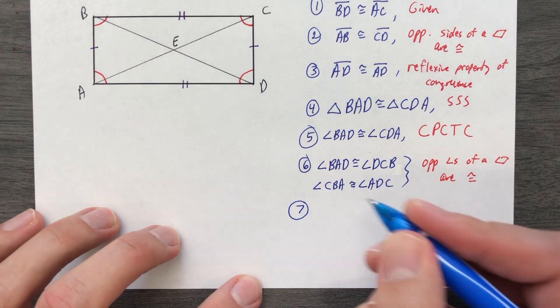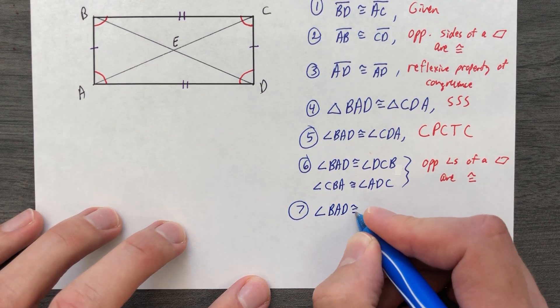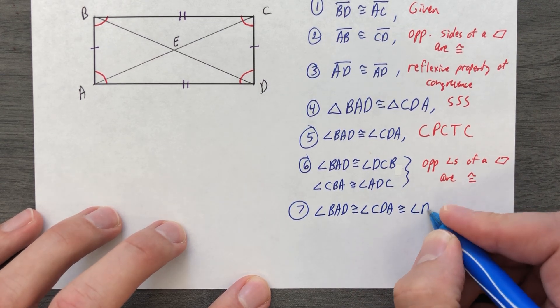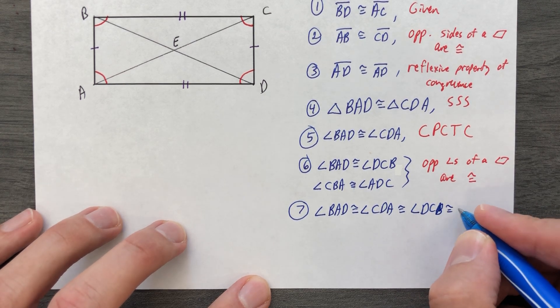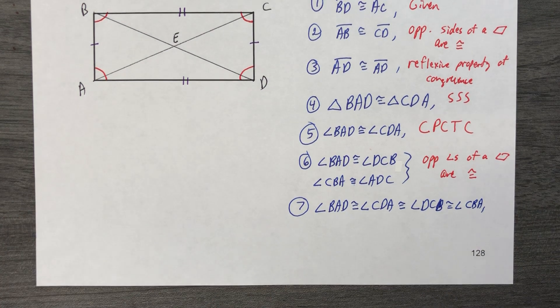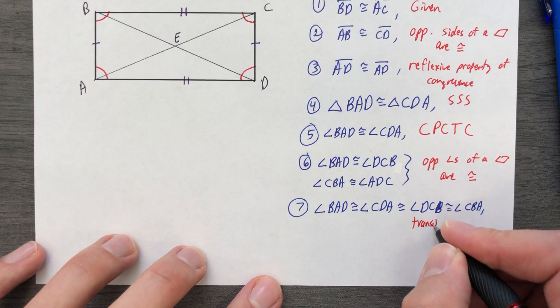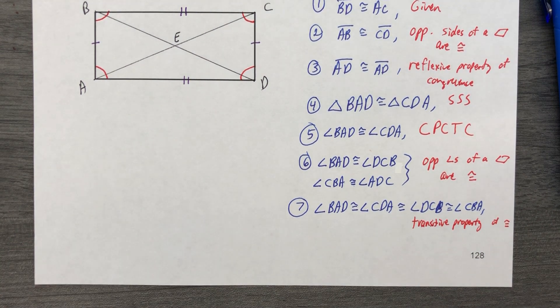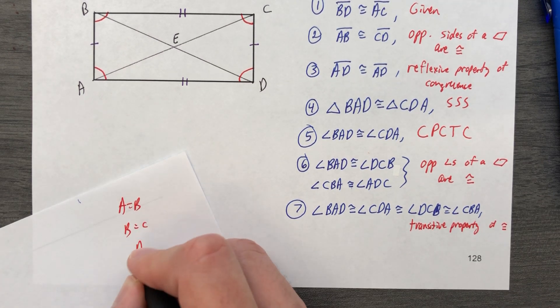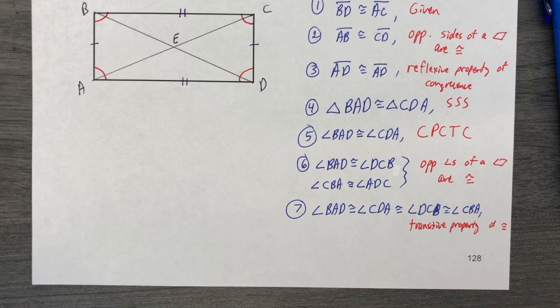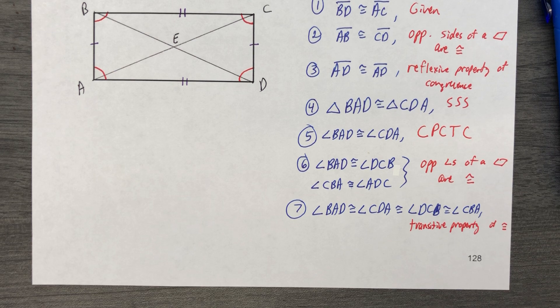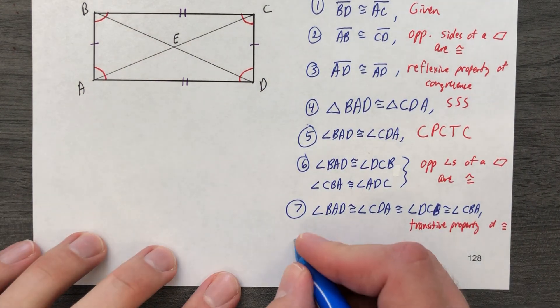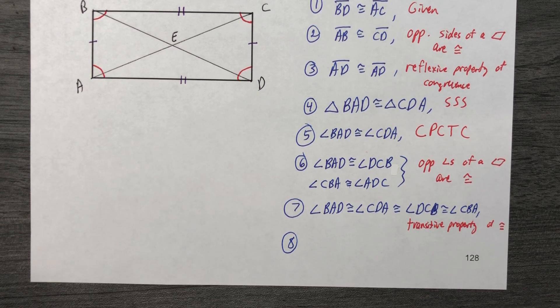Angle BAD is congruent to angle CDA is congruent to angle DCB is congruent to angle CBA. How do you know that? Transitive property. Transitive property, just in case you forgot, is the situation that says that if A equals B and B equals C, then A equals C. And we have done that. Well, now that we've said that all four angles are the same, we have a rectangle. Because the definition of a rectangle is a parallelogram with four congruent angles.